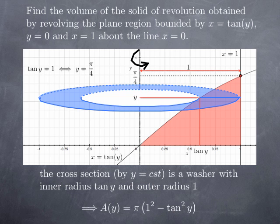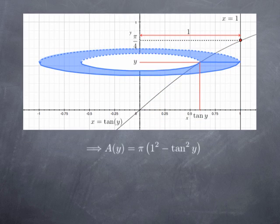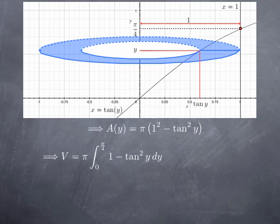The area of the cross section as a function of y is pi multiplied by the square of the outer radius minus the square of the inner radius. The volume is the integral of that function over the interval 0 to pi over 4, since that is the range of y-values corresponding to the region. So we get pi multiplied by the integral from 0 to pi over 4 of 1 minus tangent squared y.